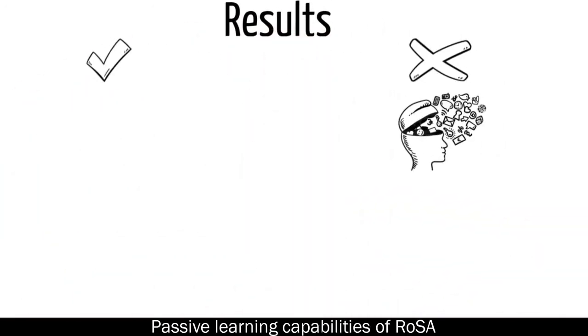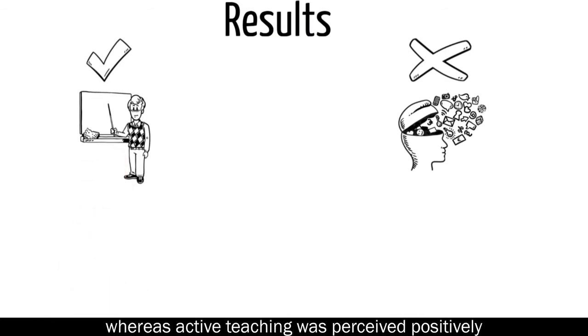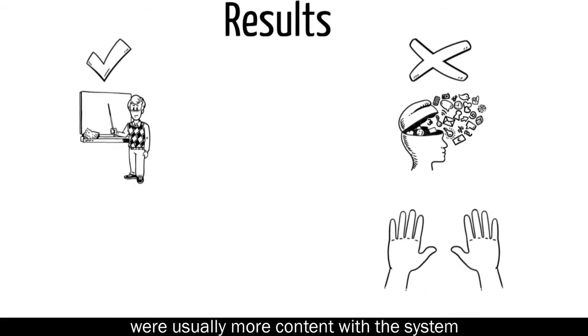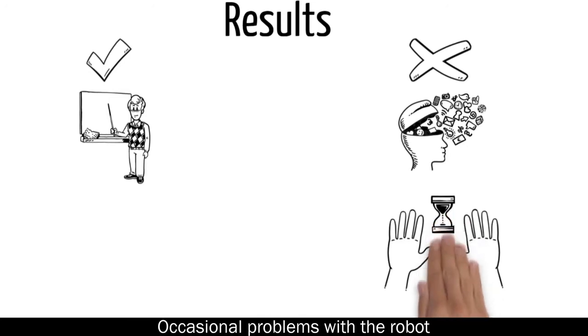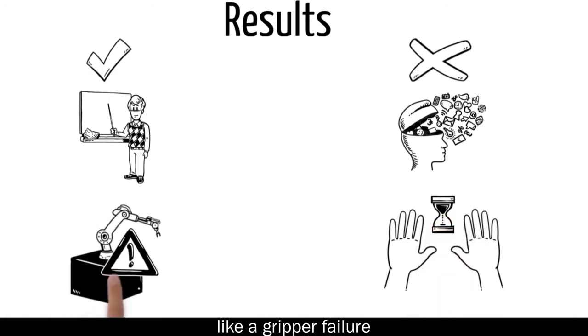Passive learning capabilities of ROSA show a negative correlation with the score, whereas active teaching was perceived positively, although rarely used. The two-handed gesture users were usually more content with the system but needed more time to complete the tasks. Additional problems with the robot, like the gripper failure, do not show up as having an impact on the user experience.